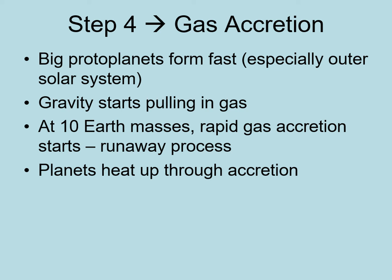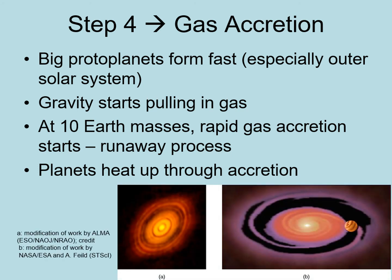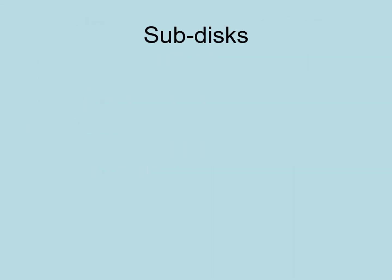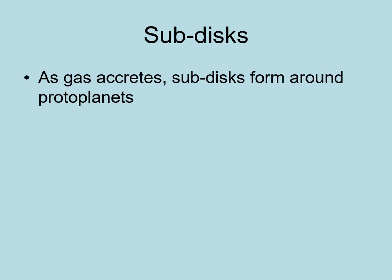This rapid gas accretion will continue until the planet has cleared out most of the gas at its distance from the star, leaving a gap in the disk — a ring with very little gas in it. The gas being accreted by the planet doesn't necessarily fall straight onto it. Just like the gas that collapsed to form the star, this gas will generally have some spin to it, so some of it will form a disk around the growing planet.